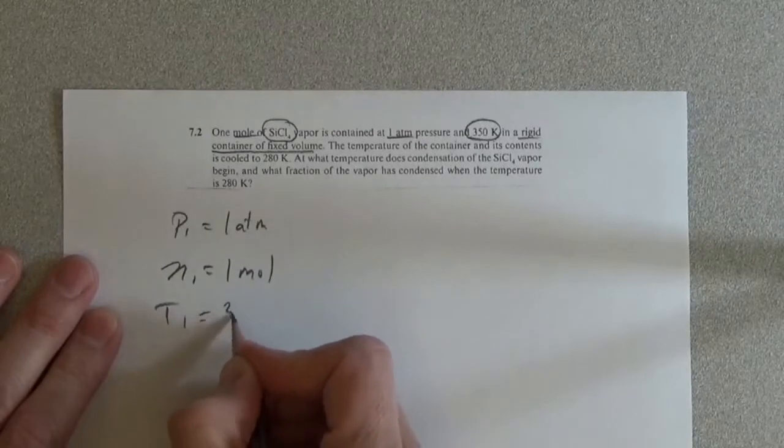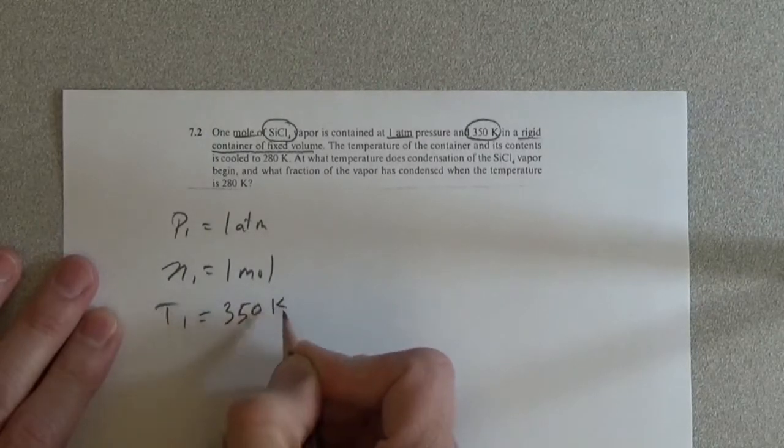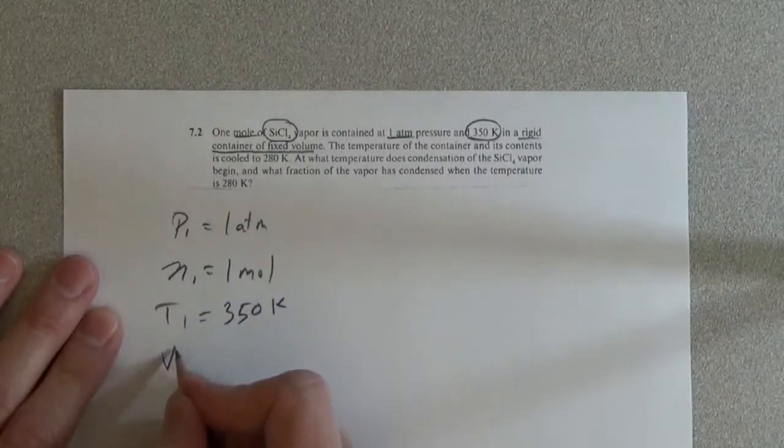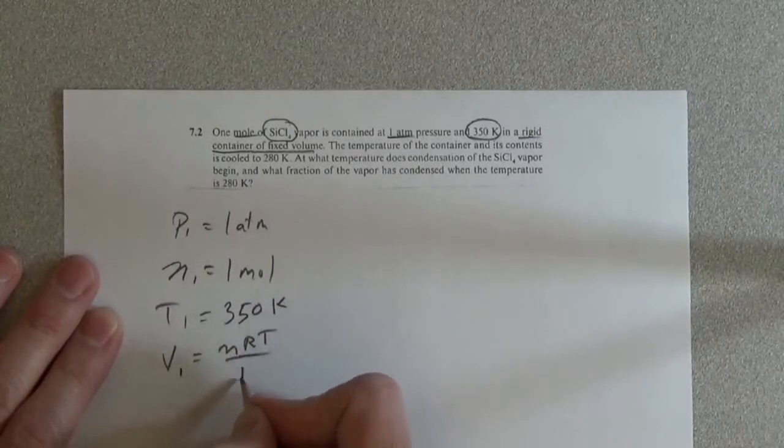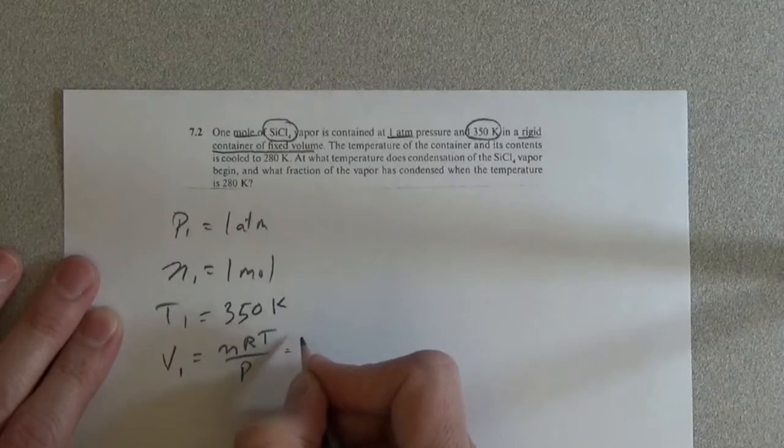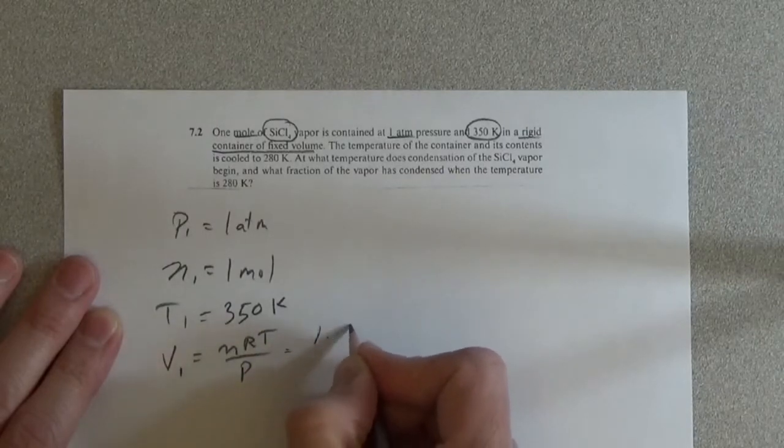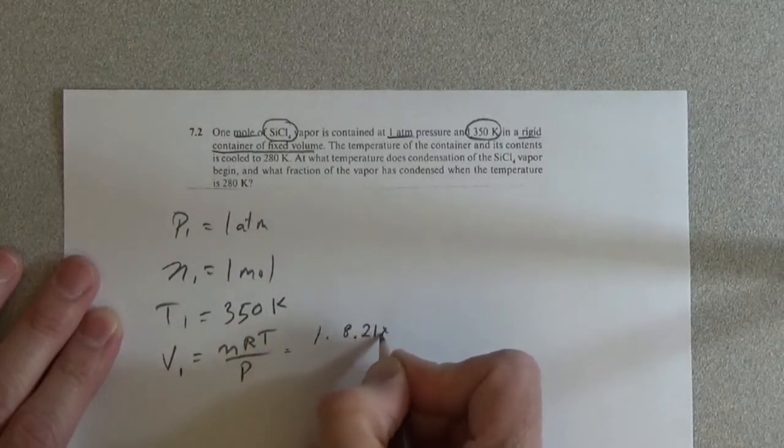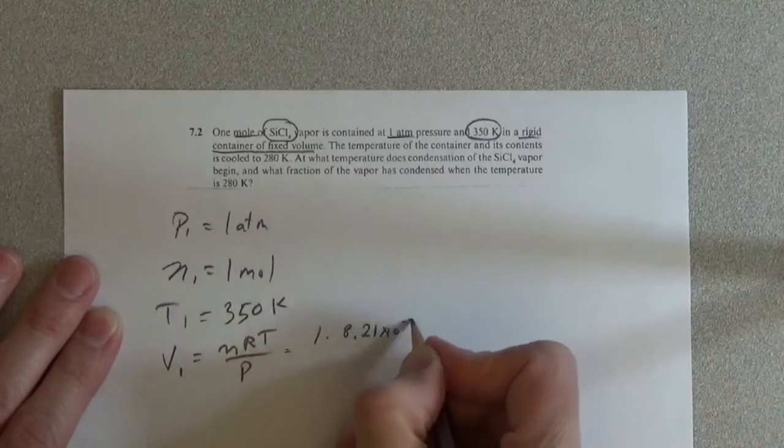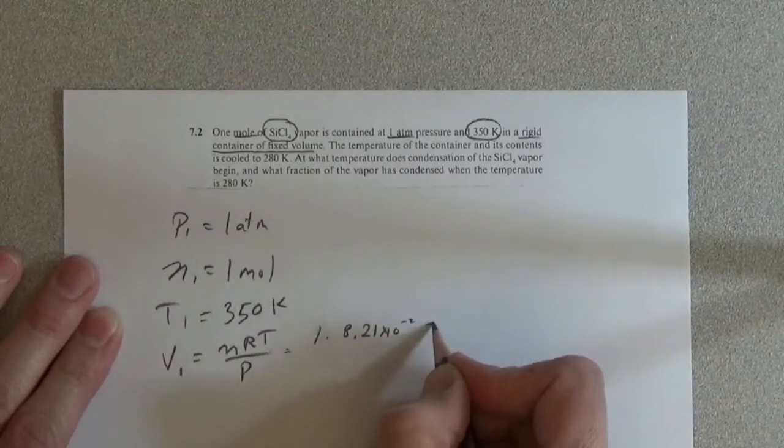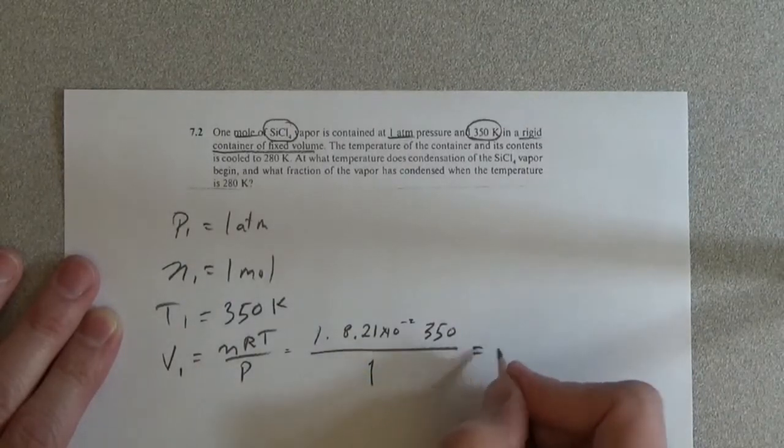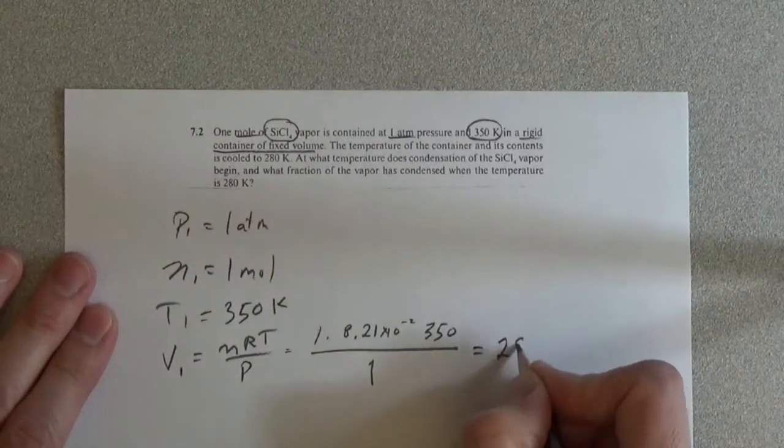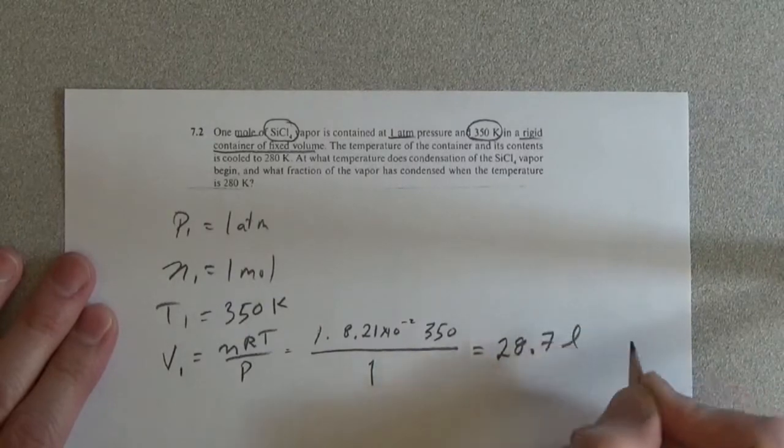T1 is equal to 350K, therefore V1 is equal to NRT over P is equal to 1 times 8.21 times 10 to the minus 2 times 350 divided by 1, which is equal to 28.7 liters.